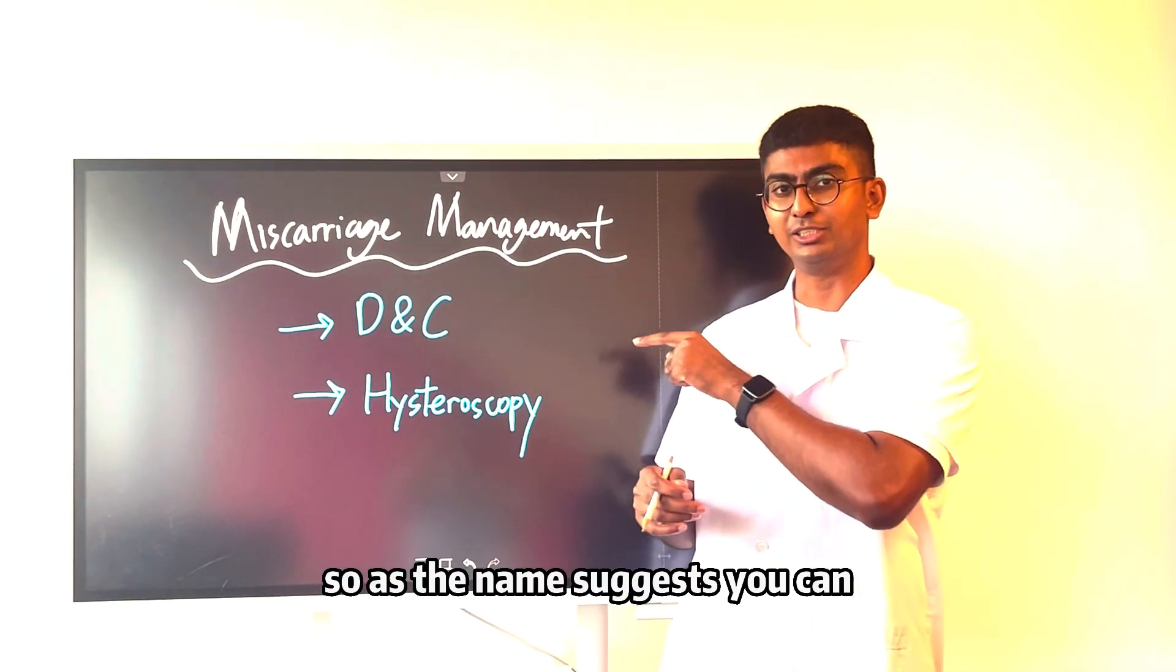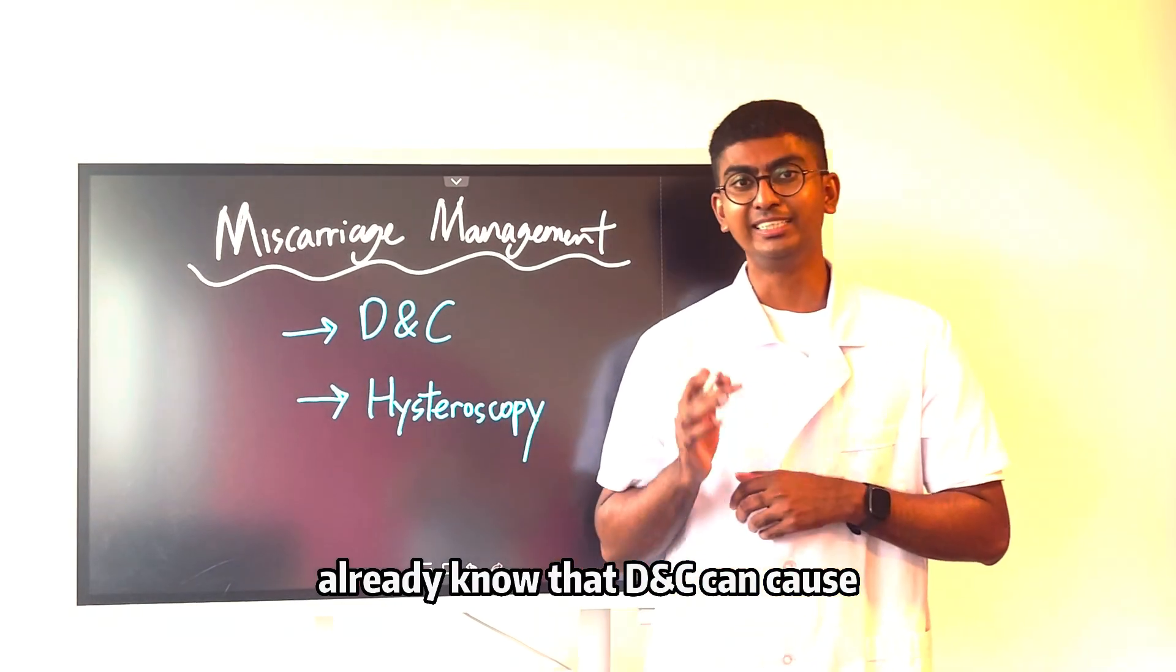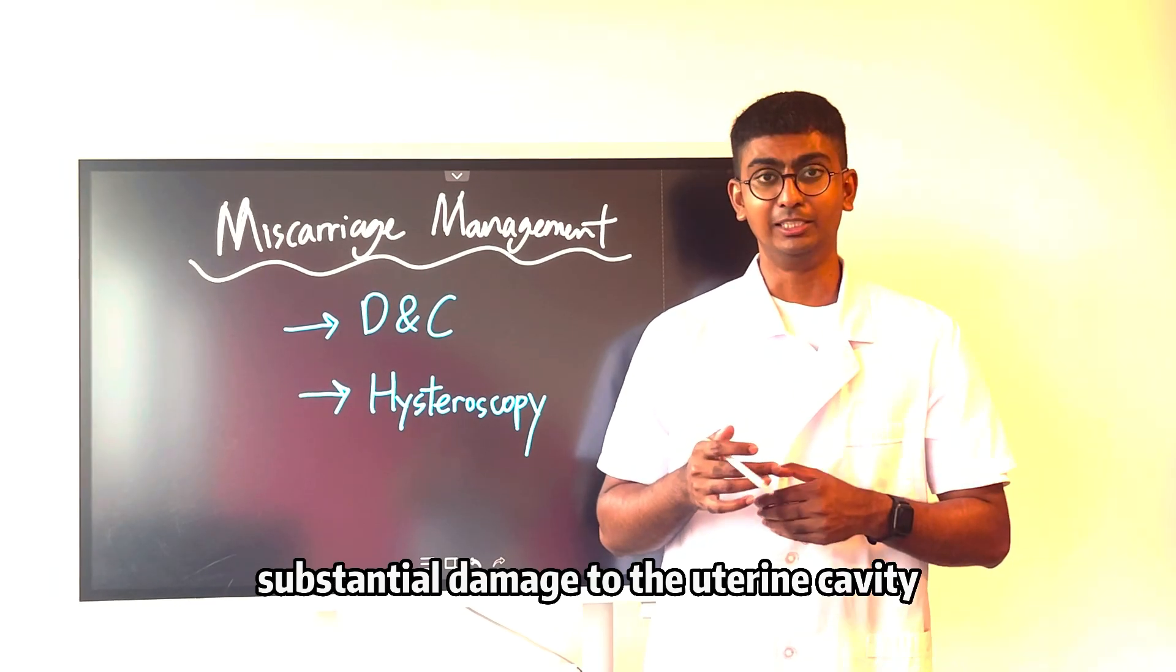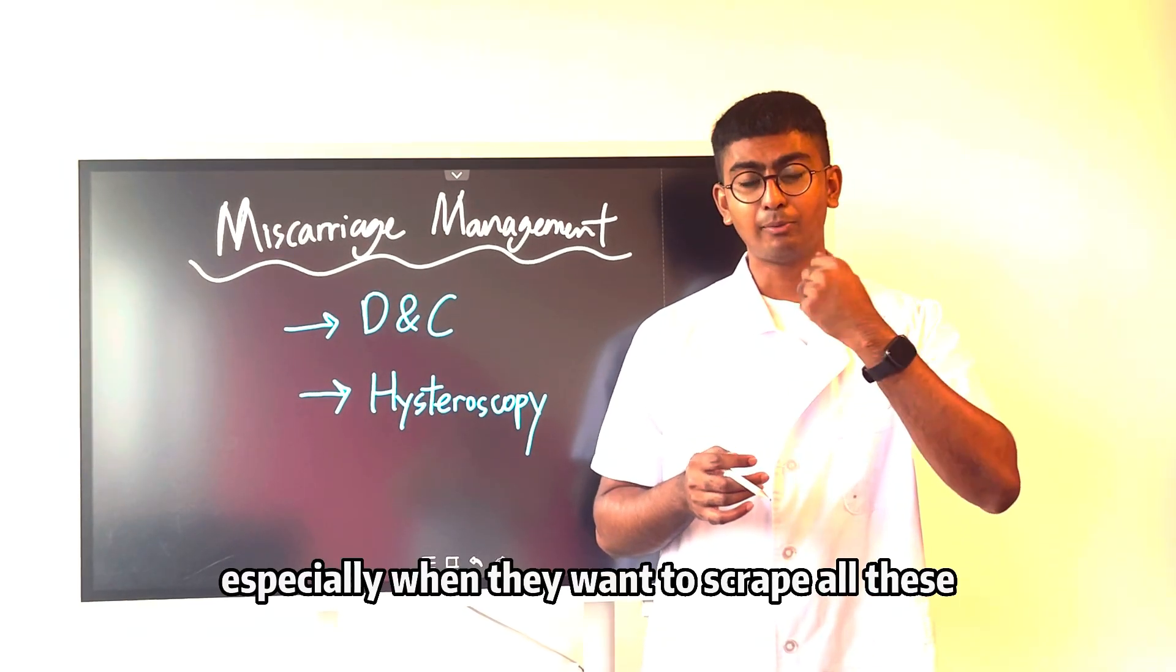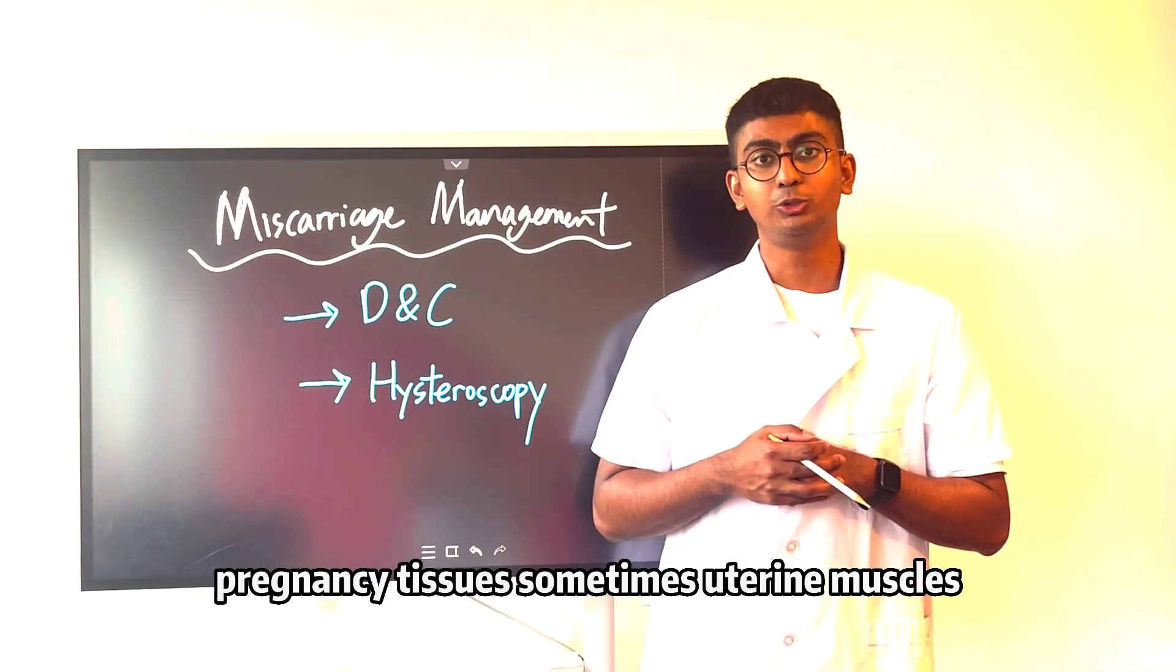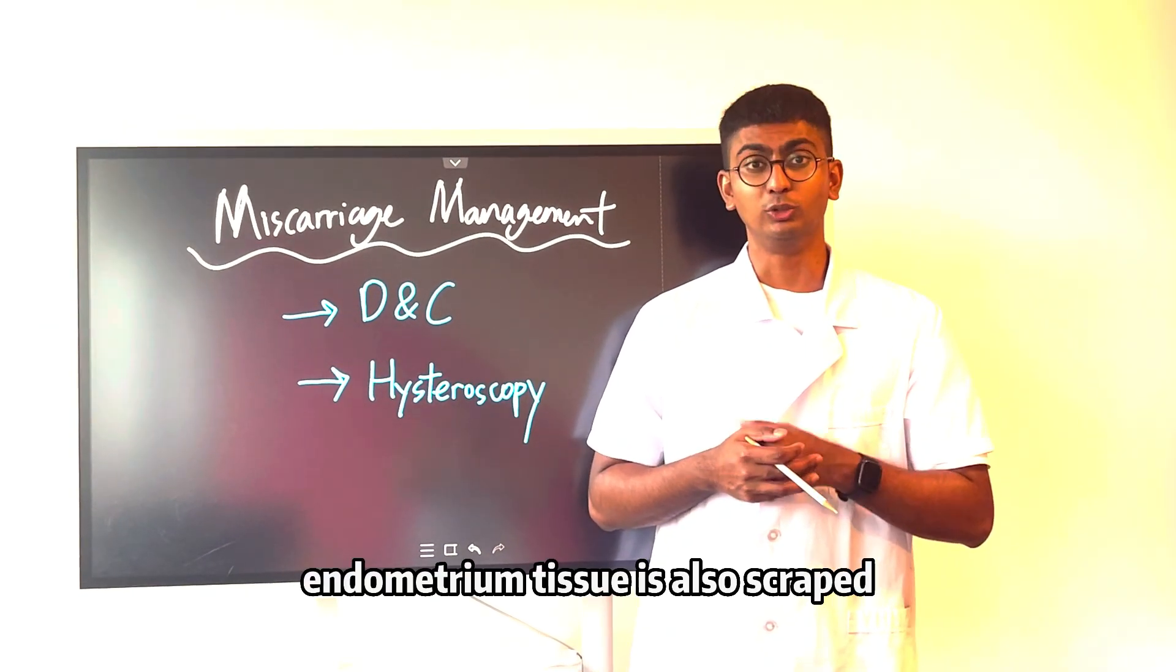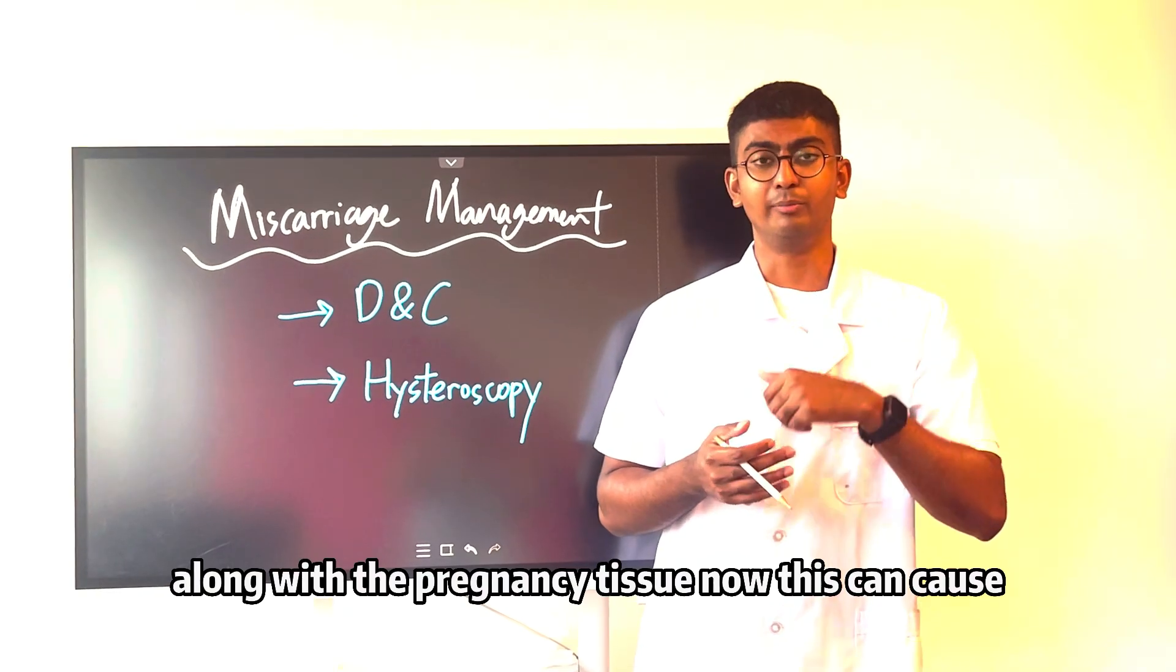As the name suggests, you can already know that D&C can cause substantial damage to the uterine cavity, especially when they want to scrape all these pregnancy tissues. Sometimes uterine muscle and endometrium tissue is also scraped along with the pregnancy tissue.